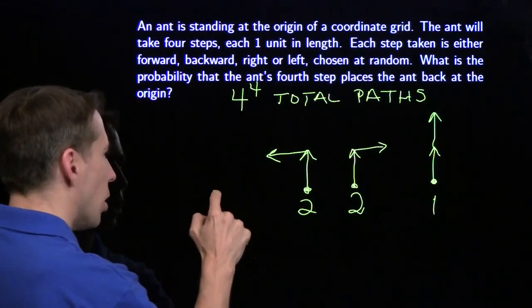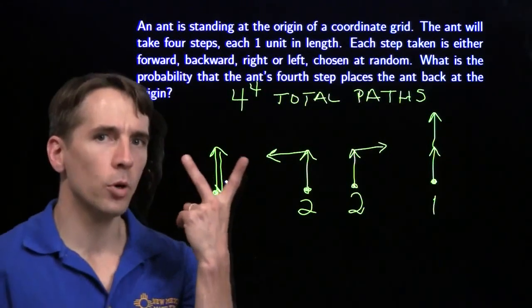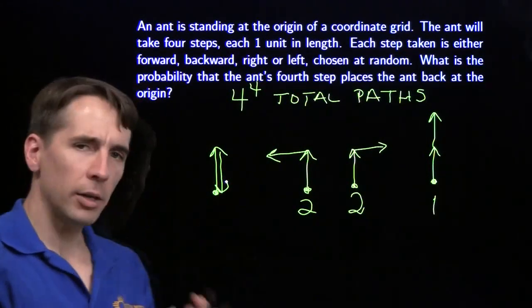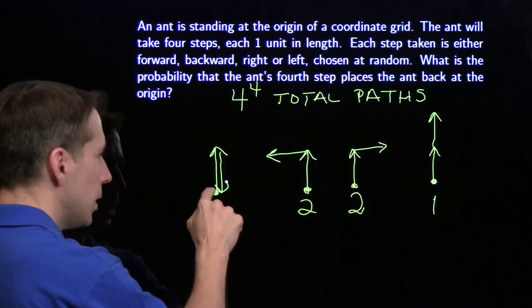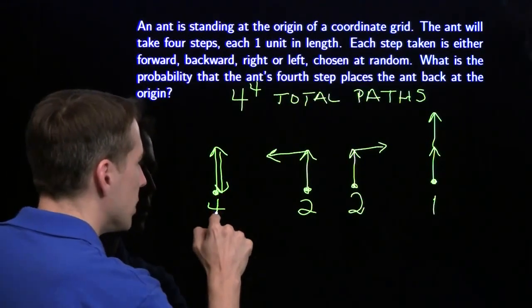What if the ant starts off going forward, then turns around, goes backward, comes right back home. But the ant still has to take two more steps. Well, now there are four ways to get back home. You can just repeat that. Then go this way and back, this way and back, down and back. It gives us four ways to get back home.